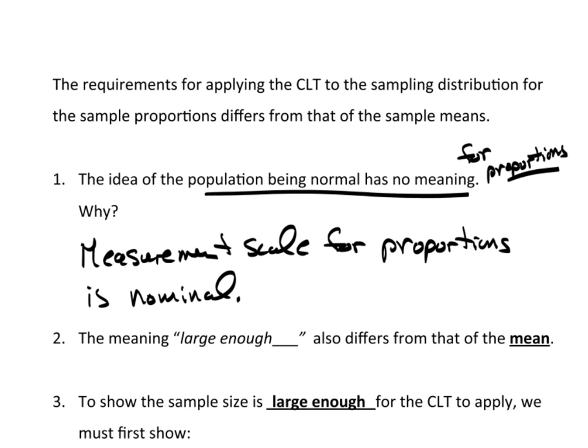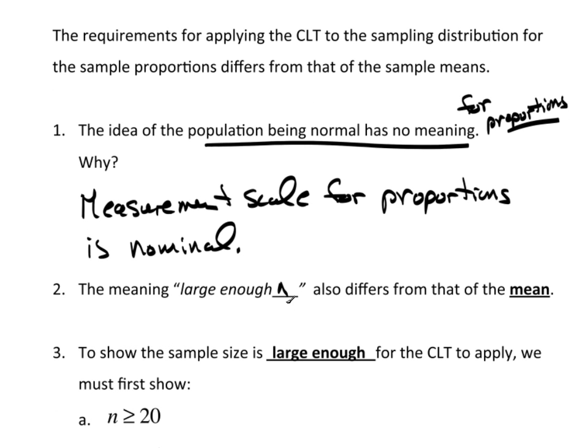So, the meaning large enough n also differs here. For the mean, we needed n to be at least 30. Well, that's not so here for the proportions.